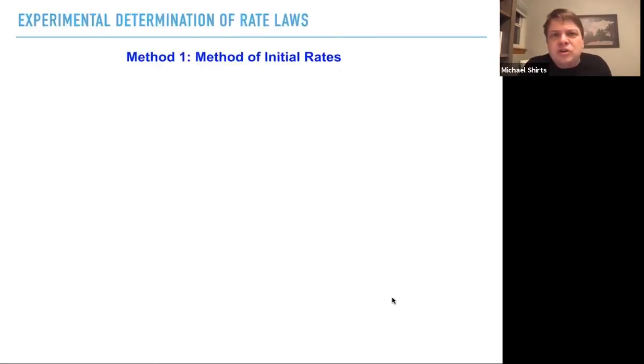So how do you experimentally determine rate laws? Well, a really common way is the method of initial rates. As you remember that the rate changes throughout the entire reaction. So you only really know the concentrations at the very beginning. So what you want to do is apply this method at the very beginning and calculate the rates over a short time interval at the beginning.